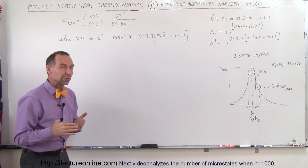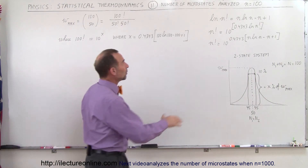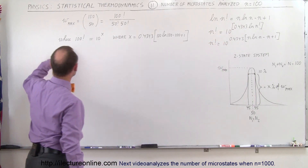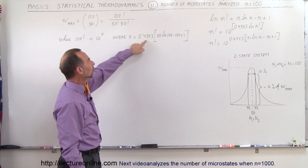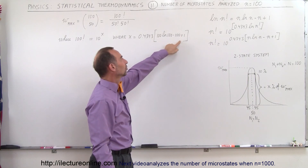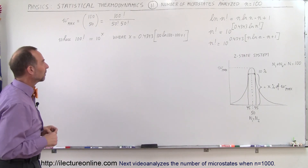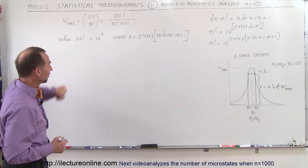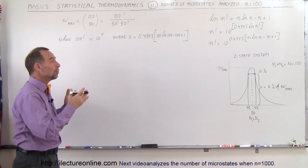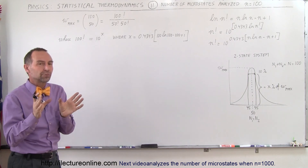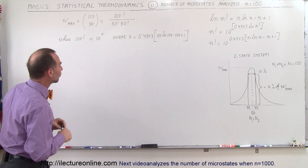100 factorial is such a large number that you can no longer calculate it on your calculator, so now we're going to use Stirling's approximation. To find 100 factorial, that will be 10 to some exponent x, where x equals 0.4343 times 100 times the natural log of 100, minus 100 plus 1. We'll also use Stirling's approximation for 50 factorial to minimize uncertainty error.